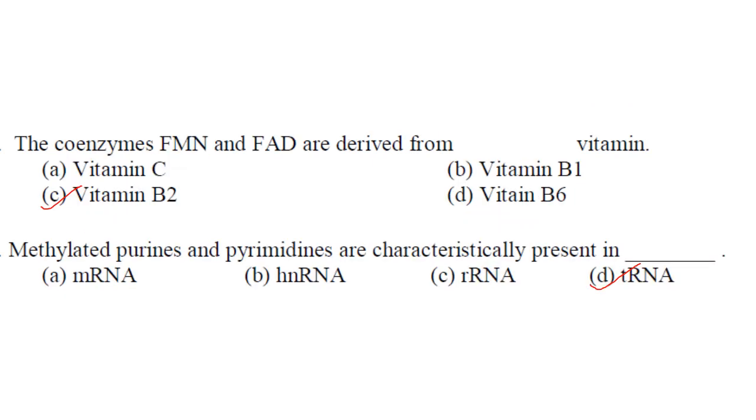The coenzymes FMN and FAD are derived from which vitamin? FMN is flavin mononucleotide and FAD is flavin adenine dinucleotide. In the name itself it is flavin, so naturally you have to remember riboflavin, which is vitamin B2. Answer is option C.